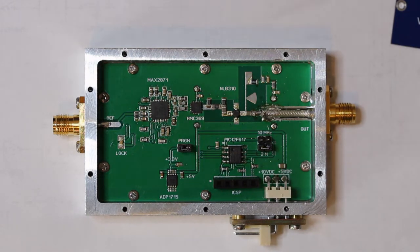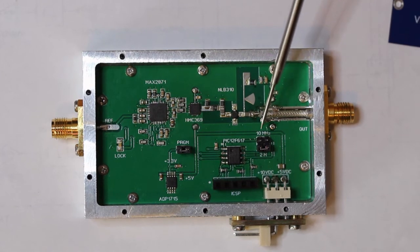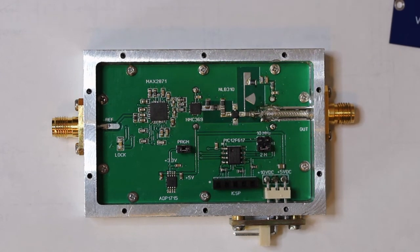The external reference to the PLL can be 10 or 100 MHz, and can be chosen by changing this jumper here. The output frequency can be set to 10.808 GHz or 10.224 GHz, depending on the position of this other jumper here. But we here stick to the 10.224 GHz.